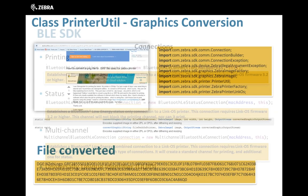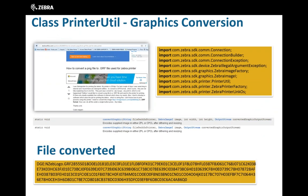Now let's look at the PrinterUtility graphics conversion class — one of the most common questions from developers over the last few years. We've implemented it in this SDK. In PrinterUtility you'll find two methods: convertGraphic and convertGraphic with width and height parameters. The libraries you need are ZebraImageFactory, ZebraImage, and ZebraPrinterFactory for Link OS, plus PrinterUtility with the two new methods.